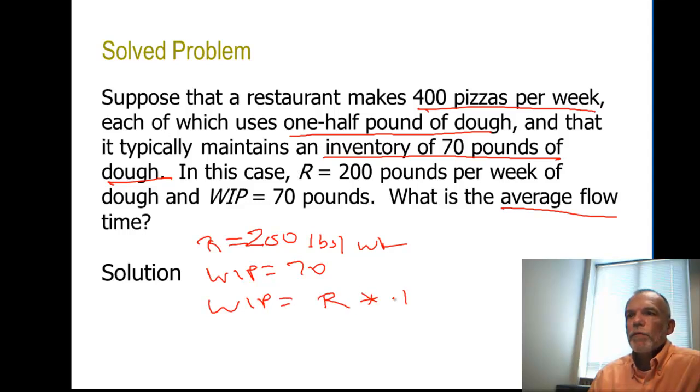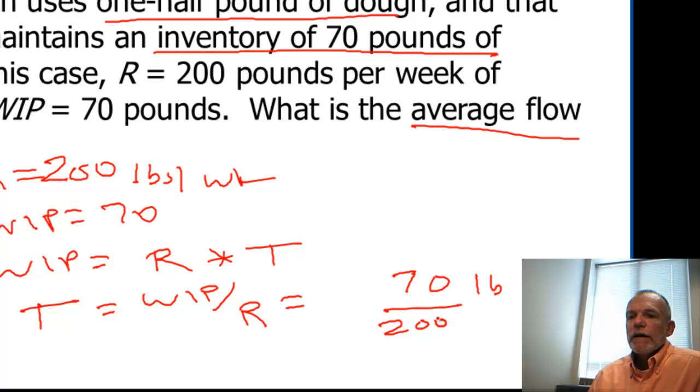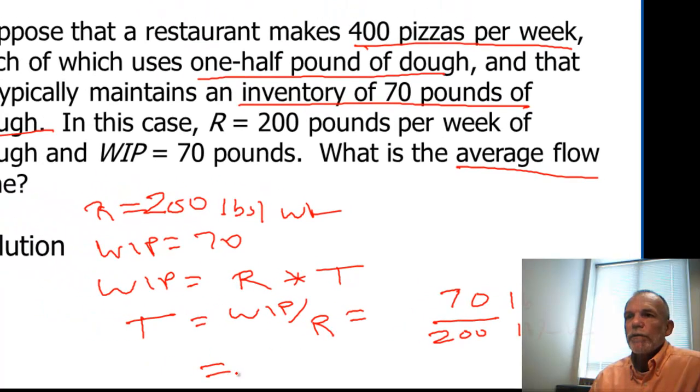Time would be the work in process divided by the rate. Work in process would be 70 pounds, rate would be 200 pounds per week. Okay, so that would give us a value of 0.35. And what's the unit of measurement? If we look over here, pounds divided by pounds per week, pounds would cancel, and we'd be left with 0.35 weeks as our average flow time.